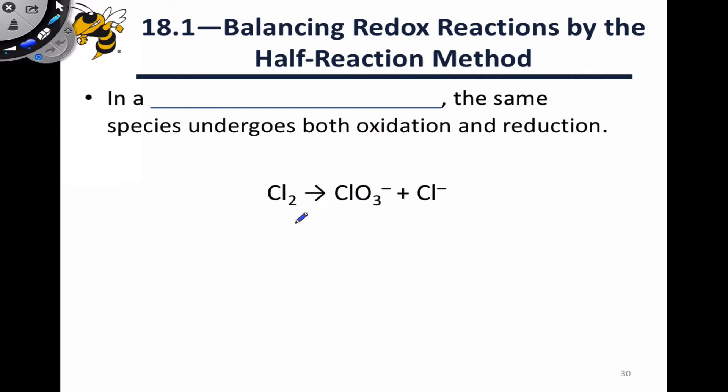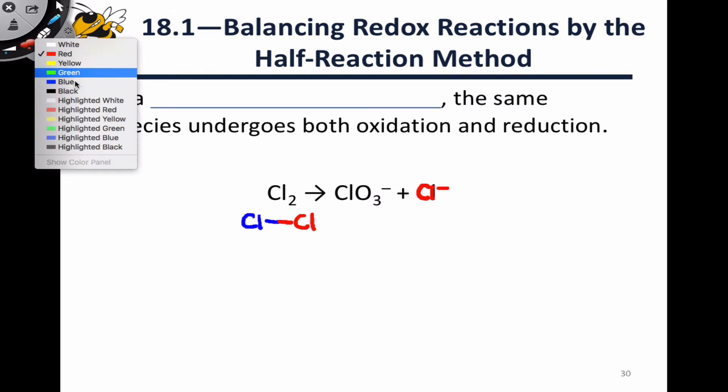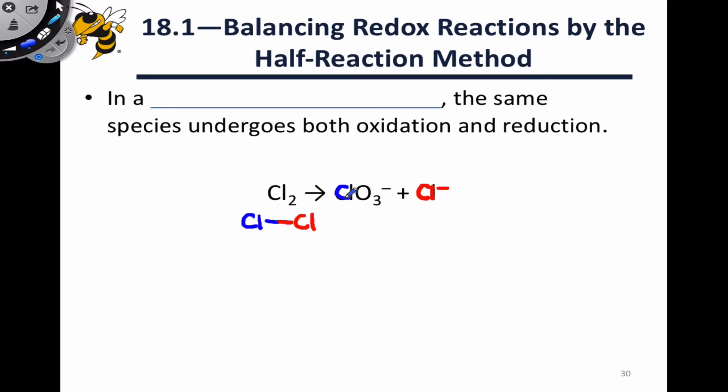This unbalanced redox reaction is fairly unique in that the molecule Cl2 undergoes both oxidation and reduction. We can see this if we think about the two chlorine atoms involved in Cl2 and their fates in the resulting product. I'm going to use two different colors for these because we'll see that they end up in two different situations. One of them ends up in Cl- and the other one ends up as a part of ClO3-.